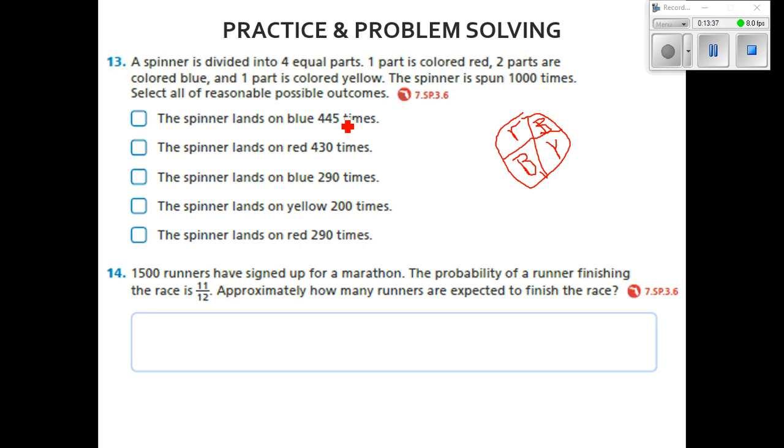The spinner lands on blue 445 times. Let's see if that's true. Well, there are two of them that are blue. That's going to be 50% of the time it's going to land on blue, because we've got 2 out of 4, right? And 2 over 4 equals one-half.